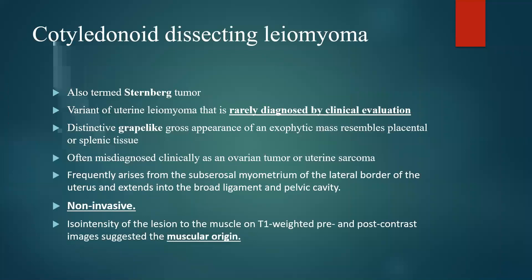I'm going to speak briefly about cotyledenoid dissecting leiomyoma, also named the Sternberg tumor. It is a variant of uterine leiomyoma that is rarely diagnosed by clinical evaluation. It has a distinctive grape-like appearance with multiple exophytic masses. It is often misdiagnosed as either an ovarian tumor or uterine sarcoma. It usually arises in the subserosal myometrium and extends along the lateral borders involving the broad ligament and pelvic cavity. The most important feature is that it is non-invasive.